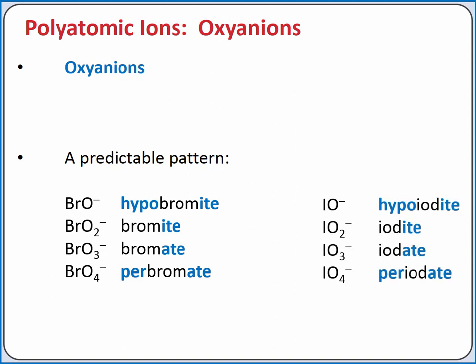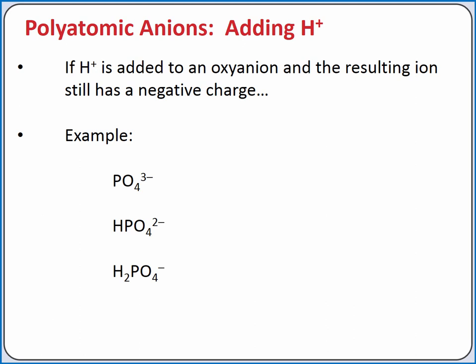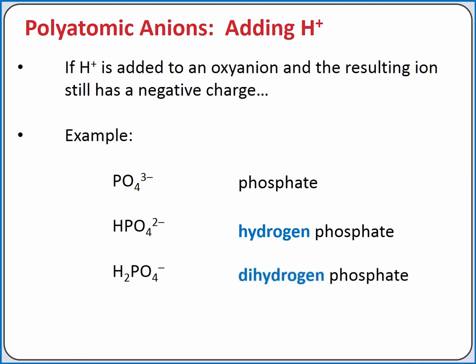Iodate follows a similar pattern. If we add an H⁺ to an oxyanion and the resulting ion still has a negative charge, we name the ion by adding hydrogen out front. For example, PO₄³⁻ is phosphate. If we add an H⁺ to phosphate, it becomes HPO₄²⁻ — notice that the charge is one less negative because we added an H⁺. The name becomes hydrogen phosphate. If we add one more H⁺ to form H₂PO₄⁻, the name becomes dihydrogen phosphate.